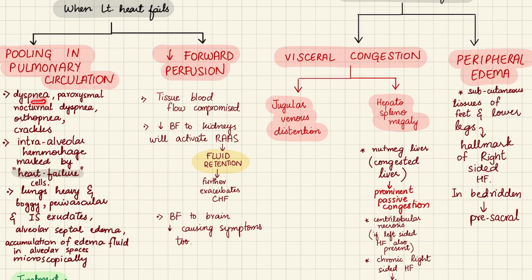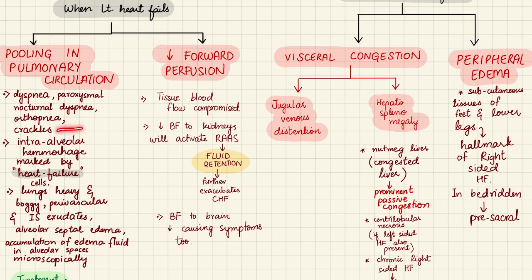This pulmonary congestion causes dyspnea (shortness of breath) and paroxysmal nocturnal dyspnea — patients cannot lie flat because lying down increases venous return, increasing load on the heart and worsening pulmonary congestion. Orthopnea similarly prevents patients from lying flat without becoming short of breath. Crackles — crackling sounds heard on auscultation — occur when fluid is present in the alveoli.